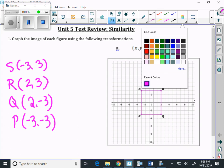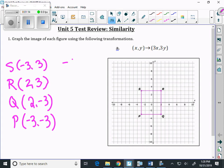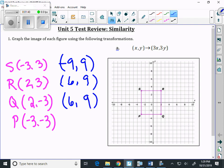So our new s is going to become negative 9. Negative 3 times 3 is negative 9, and 3 times 3 is positive 9. 2 times 3 is 6 and 3 times 3 is 9. 2 times 3 is 6 and negative 3 times 3 is negative 9.